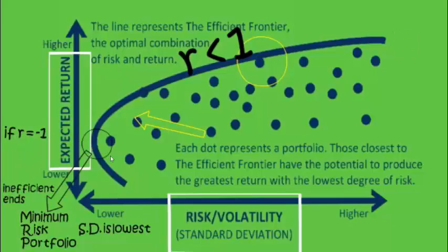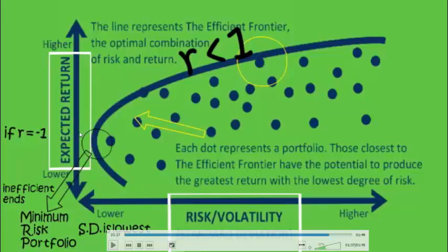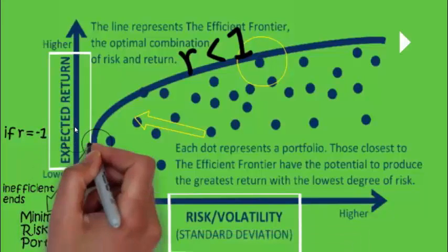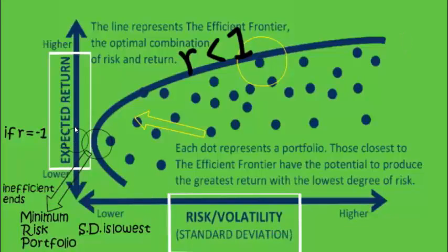Now, if the correlation R equals minus one, that is perfect negative correlation, it means when one stock rises the other falls in exactly the same magnitude. In this case, the expected return sits at a risk-free point and the investor faces no risk at all.